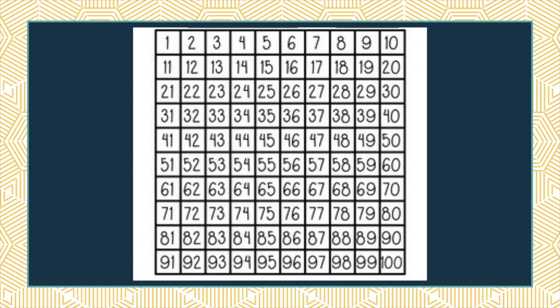Yours might look a little different — you might start at 0 and go to 99, or you might have one that goes to 120. Whatever you typically use, just replace it with this image as an example. Typically they are set up with small amounts at the top, and then we work our way down to larger amounts. This was done to mimic the way that we read — from top to bottom, left to right.